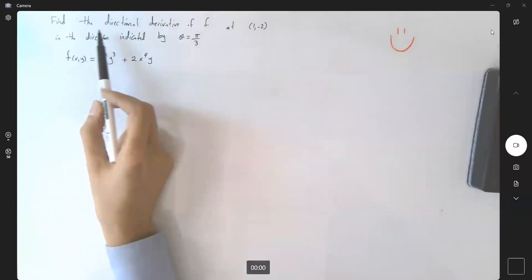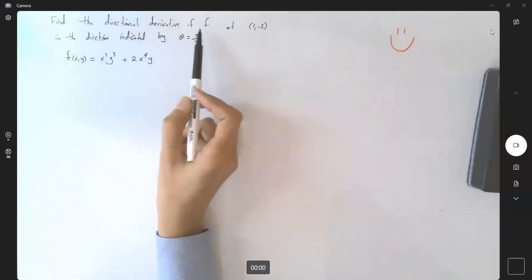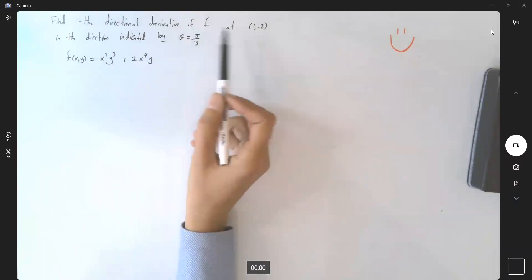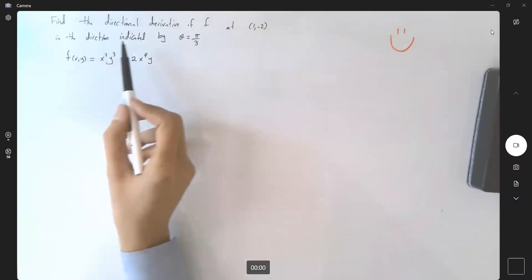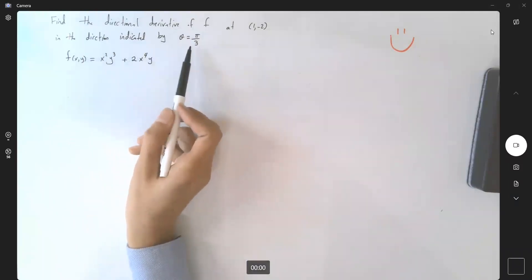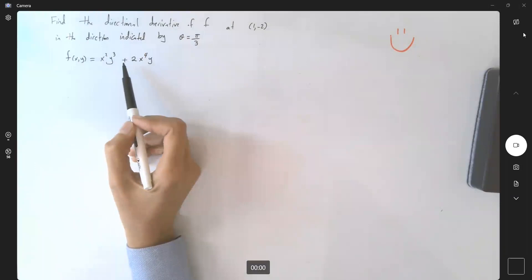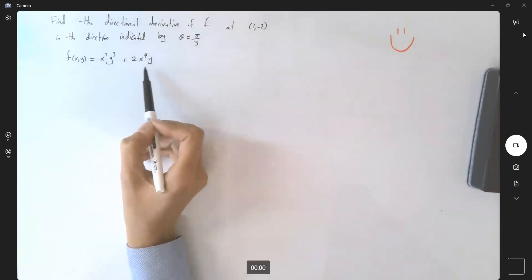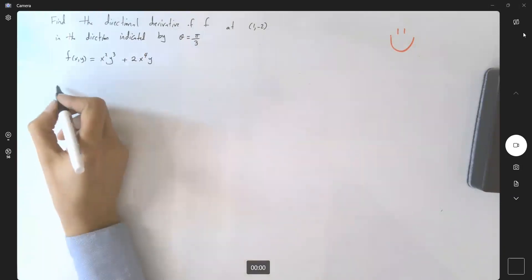Suppose the question says: find the directional derivative of function f at (1, -2) in the direction indicated by theta equals pi over 3. The function is also given to us.